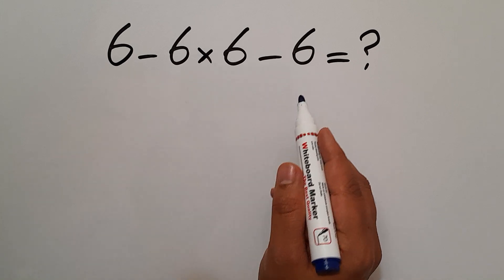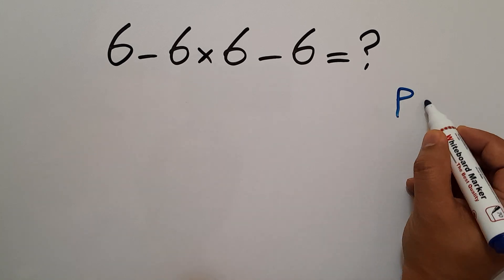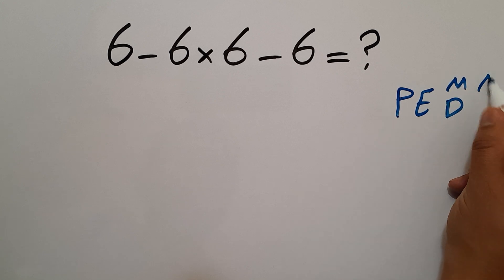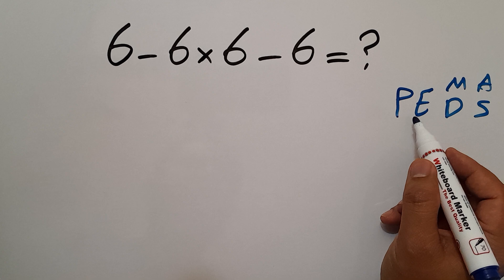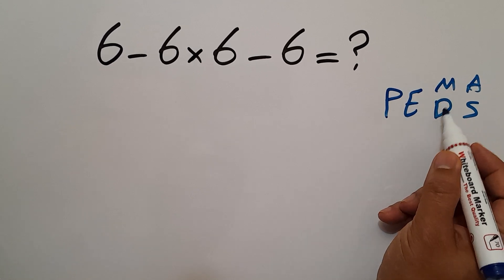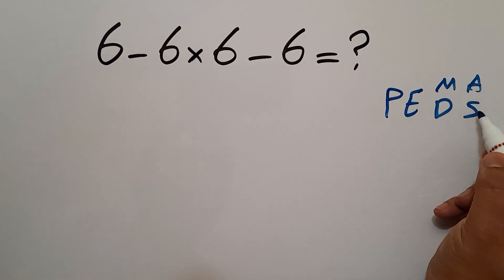According to the order of operations, which is PEMDAS, P stands for parentheses, E stands for exponents, M and D stands for multiplication and division, and A and S stands for addition and subtraction.